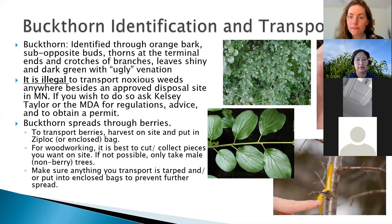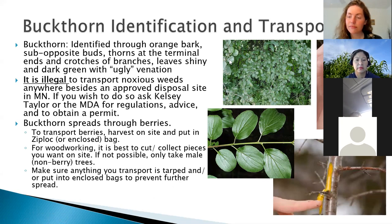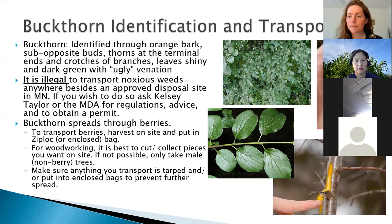To identify buckthorn, look at the buds — they kind of look like deer hooves, which is where the name 'buck' comes from. They almost line up oppositely but not quite, and at the very end of the branch there's a thorn that comes out of the middle. Think of it as a thorn in the middle of a buck hoof. Also, if you peel a little bit of the bark away, it's always going to have a really bright orange color — that's unique to buckthorn.